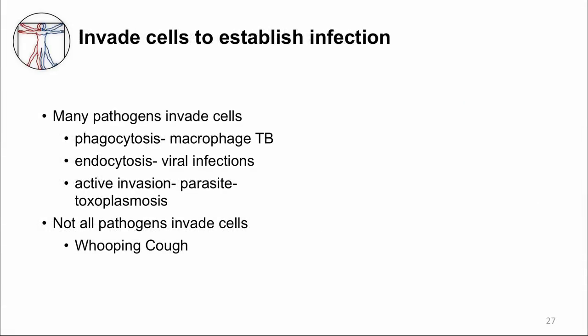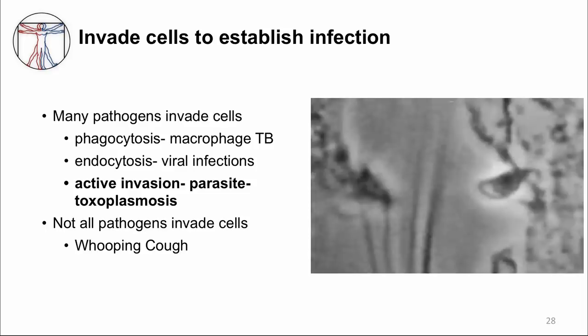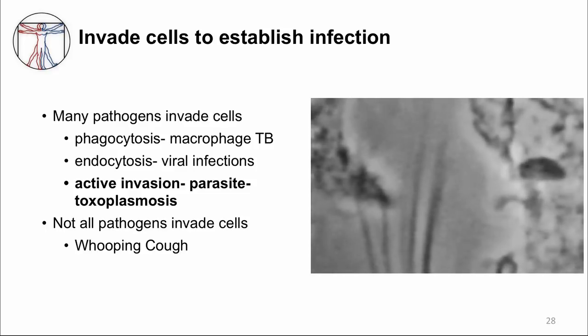Like Salmonella, many pathogens invade cells as a way to establish an infection. This is true of all viruses since they require the host cell machinery for replication. There are several ways to invade cells for intracellular growth. Some bacteria, like Mycobacterium tuberculosis, infect macrophages through phagocytosis and then survive inside the phagosome. Viruses mostly enter through endocytosis and then invade the cytosol. Apicomplexan parasites, like Plasmodium and Toxoplasma, use a sophisticated mechanism of active invasion to squeeze themselves into host cells. You can see Toxoplasma gondii gliding over to a cell and squeezing itself into the cell.